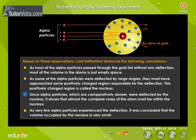Since alpha particles, which are comparatively denser, were deflected by the nucleus, it shows that almost the complete mass of the atom must be within the nucleus. As very few alpha particles experienced the deflection, it was concluded that the volume occupied by the nucleus is very small.